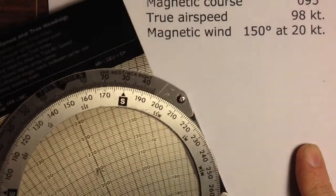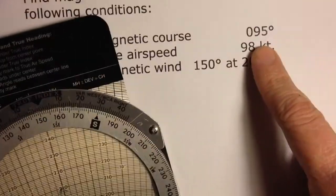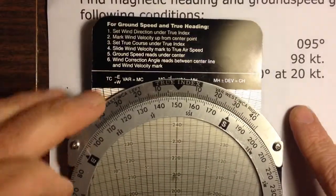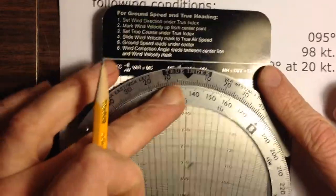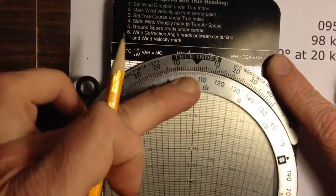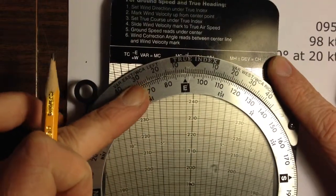Then I'm going to put the true course. The course I want to fly is 95 degrees, so I'll take this and adjust it back, swing it, until I'm showing 95 degrees under the true index.